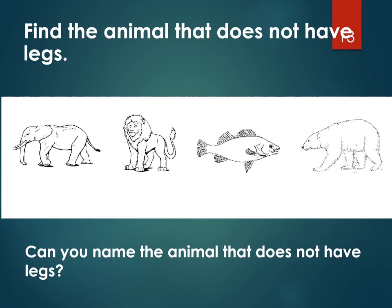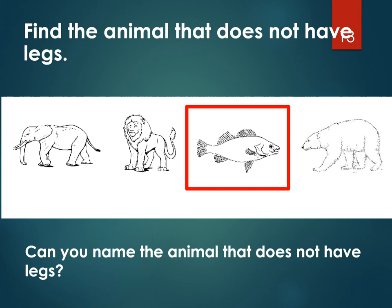We have a set of animals. Can you find the animal that doesn't have any legs? Did you point to this one? If you did, then you are correct. What is that animal that doesn't have any legs? It is a fish. Very good. Can you name the other animals that you see here? The first animal is an elephant, the next animal is a lion, and the last animal is a polar bear. Very good — you know your animals.